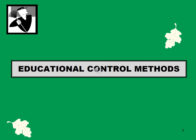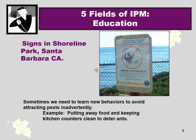Now we'll go through each of those five categories, starting with educational control methods in IPM. Aside from yourself as the landscape maintenance person learning about a pest and its life cycle, you can educate other people in a public situation — like here at Shoreline Park, where a sign says 'do not feed the ground squirrels.' Sometimes we need to learn new behaviors to avoid attracting pests we don't realize we're attracting. Leaving food out attracts fruit flies, ants, and flies. First you have to learn what is attracting them and what you're doing that provides an attractant for the pest.